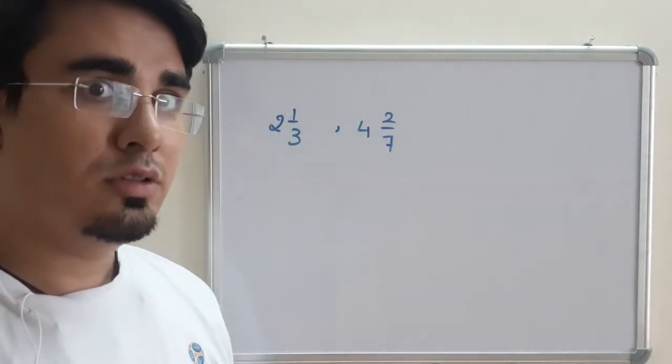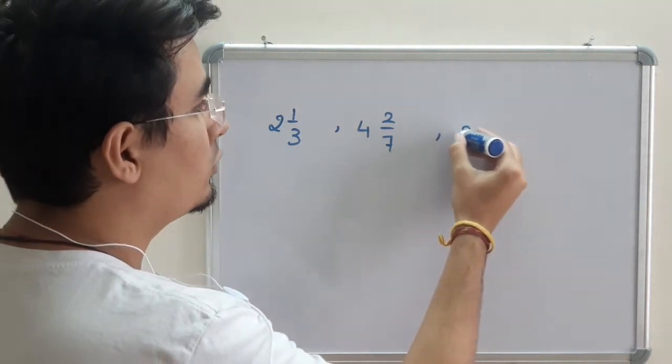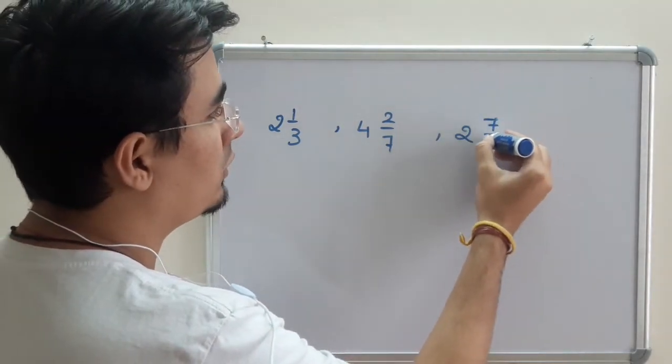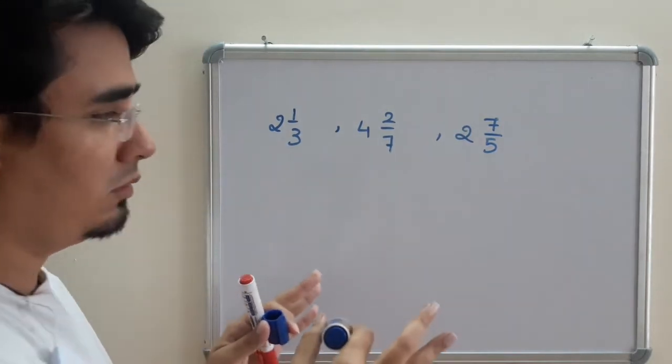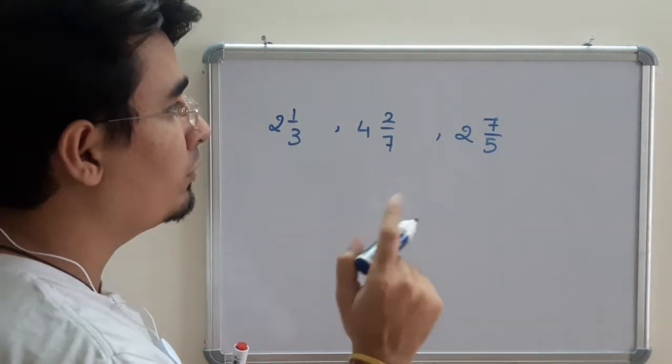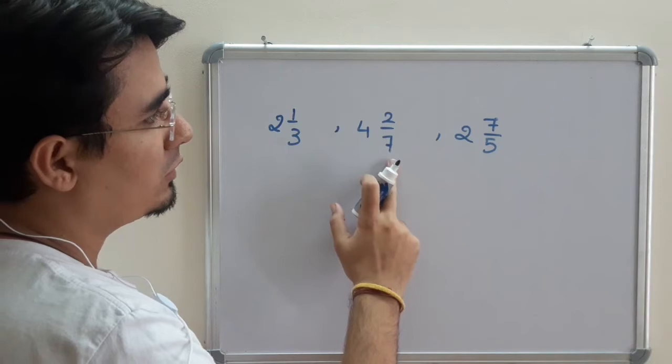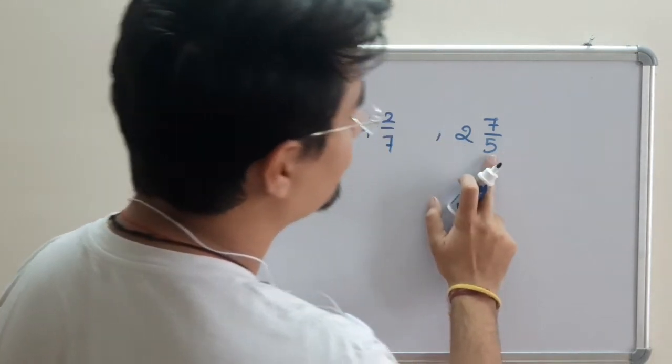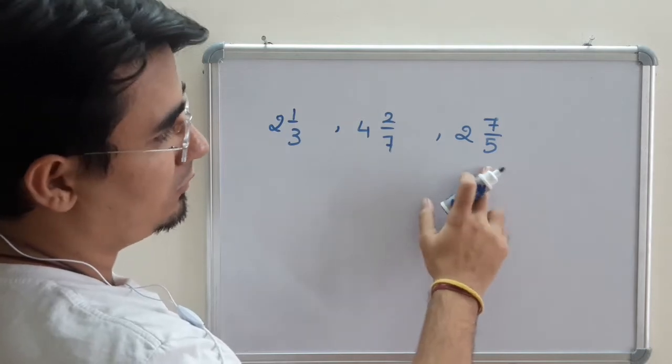Suppose a mixed fraction form is given as 2 7/5. As we discussed in the beginning, mixed fraction is whole and a proper fraction. But this is whole and an improper fraction. So we have to rewrite in the mixed fraction form properly. I will show you two ways.